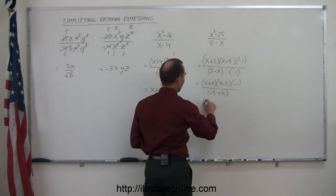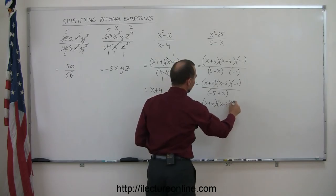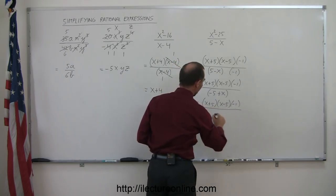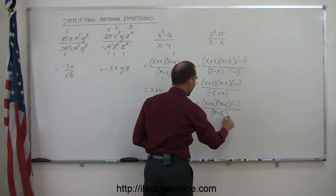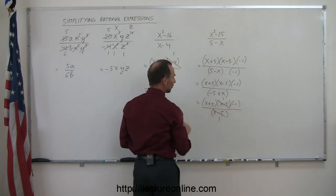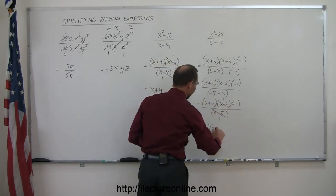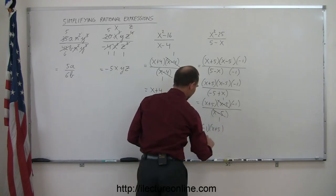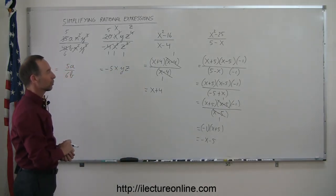I can write this as x plus 5 times x minus 5 times a minus 1, all divided by an x minus 5. And now I can see that this cancels out that, so this is a 1, this is a 1. And now I have a negative 1 times x plus 5, so I can write this as negative 1 times x plus 5. Or, if you like it better, you can write this as minus x minus 5. Either way, it's the same answer, and that's a simplified form of that expression.